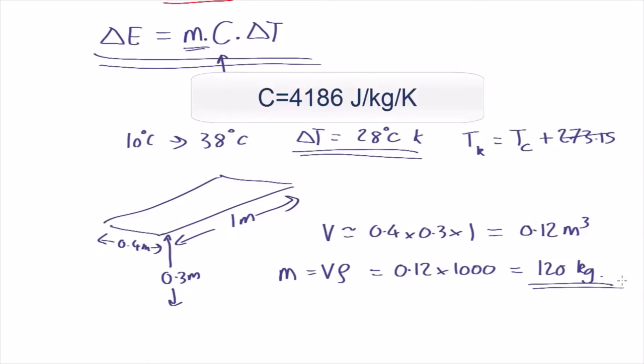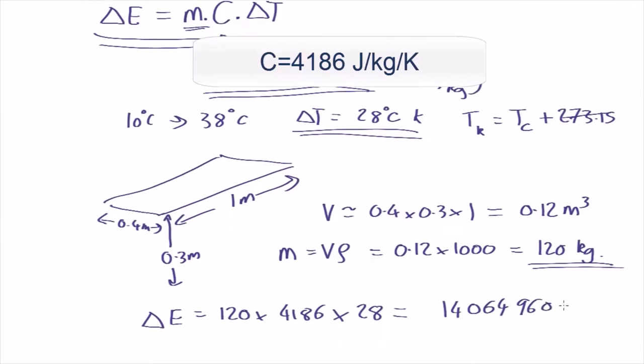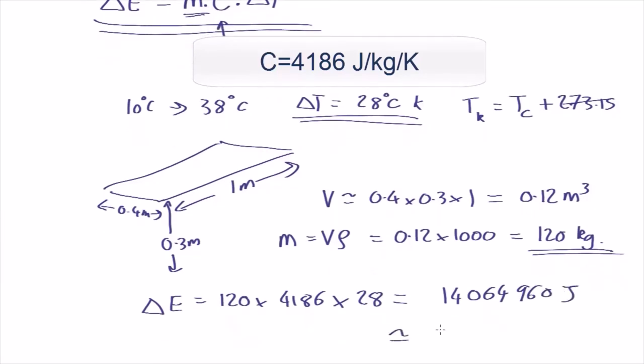Okay, so now how much energy do we need? Let's use that equation. So delta E equals the mass, which is 120, times the specific heat capacity, which is 4186, times the change in temperature, which is 28 Kelvin, which comes out as 14064960 joules, roughly speaking 14 million joules, 14 megajoules, which is a lot of energy. That's why running a hot bath will bump up your energy bill quite a lot.